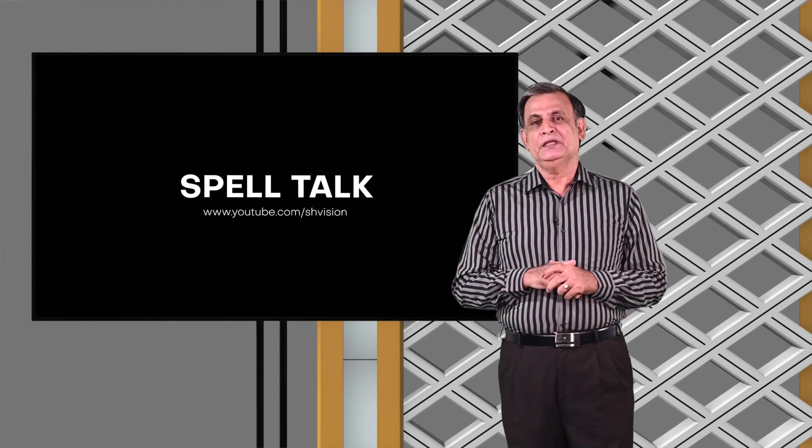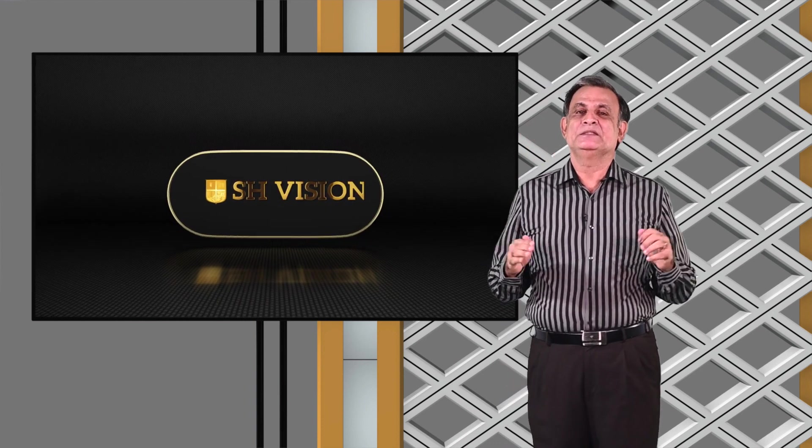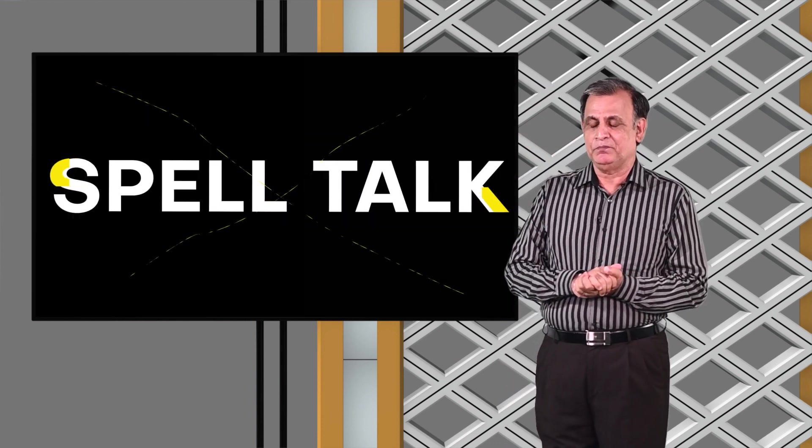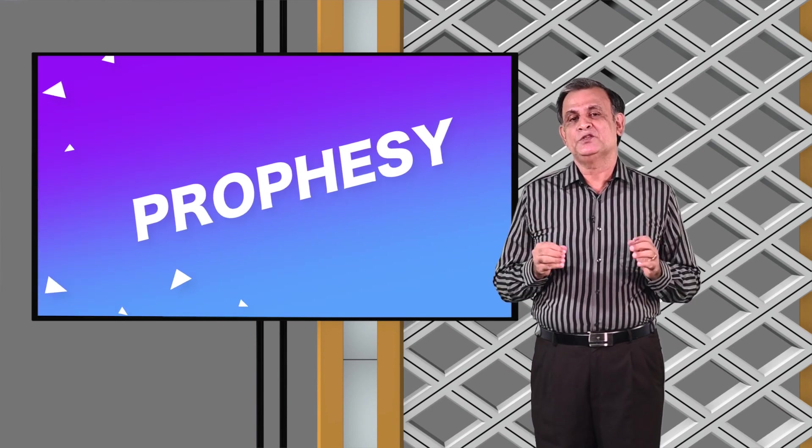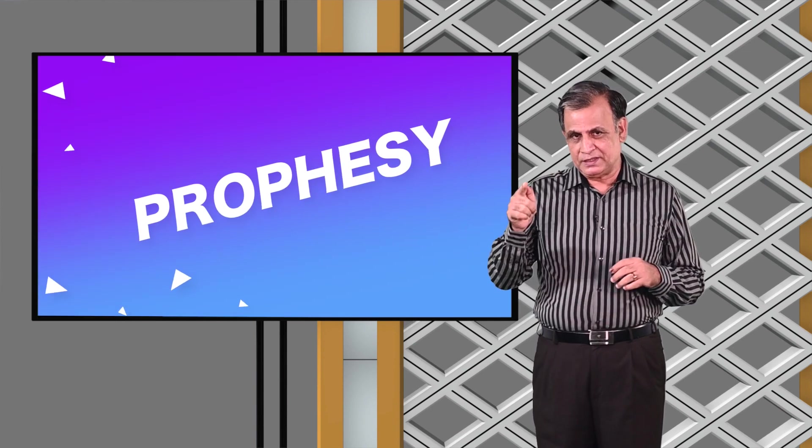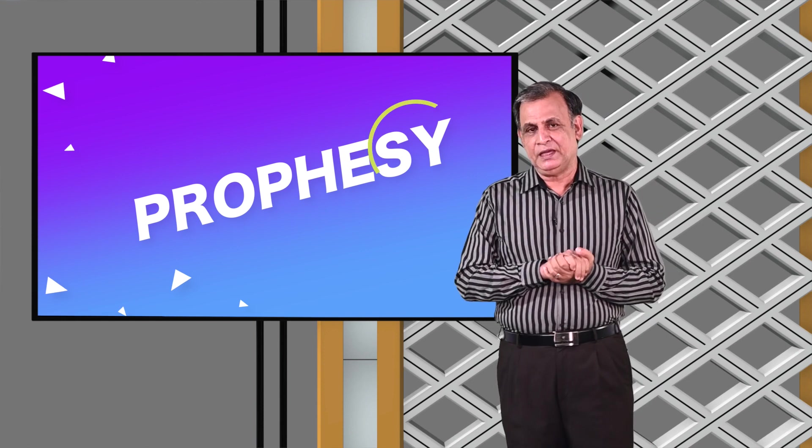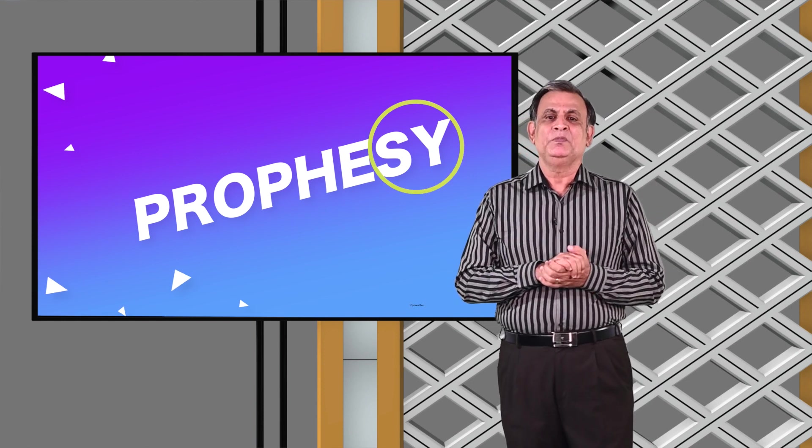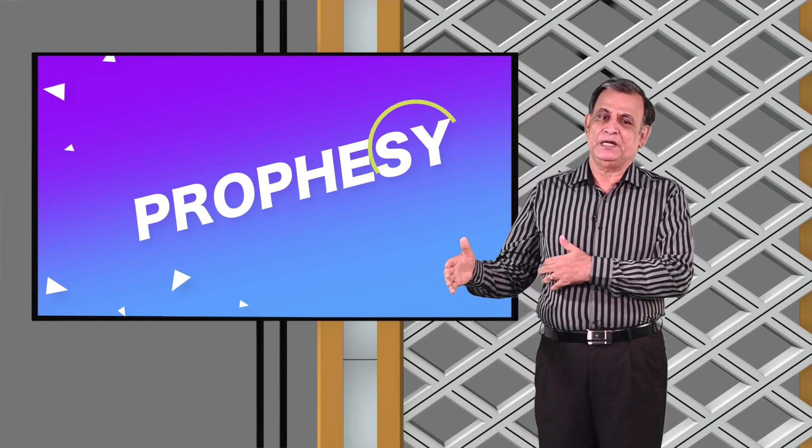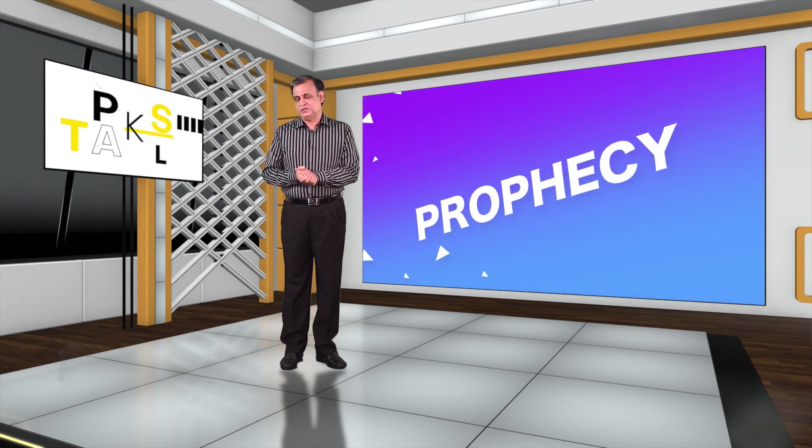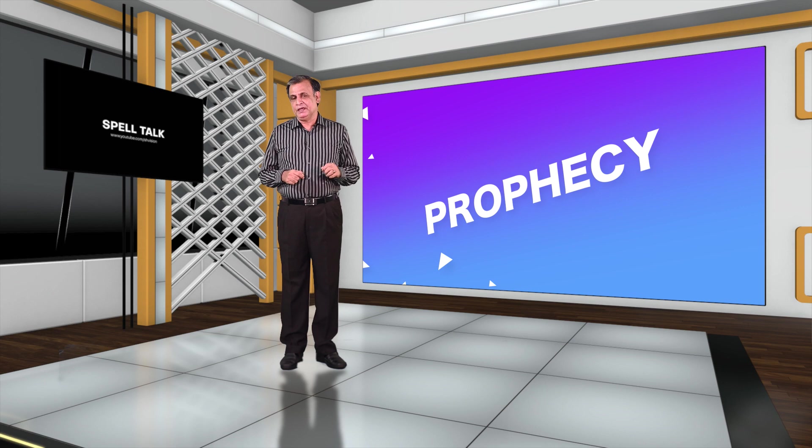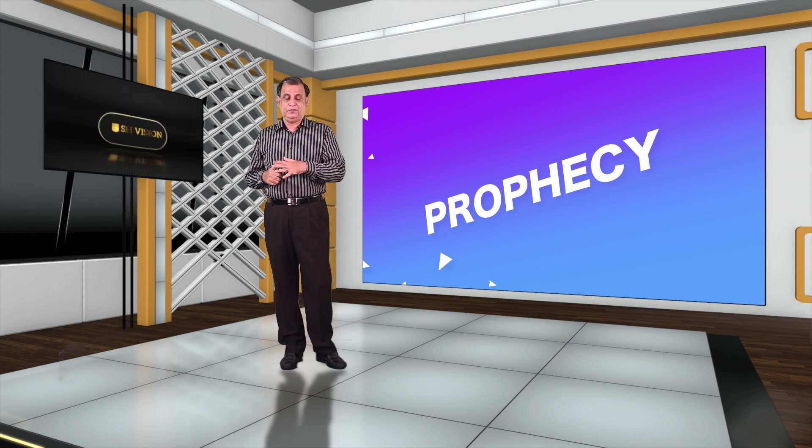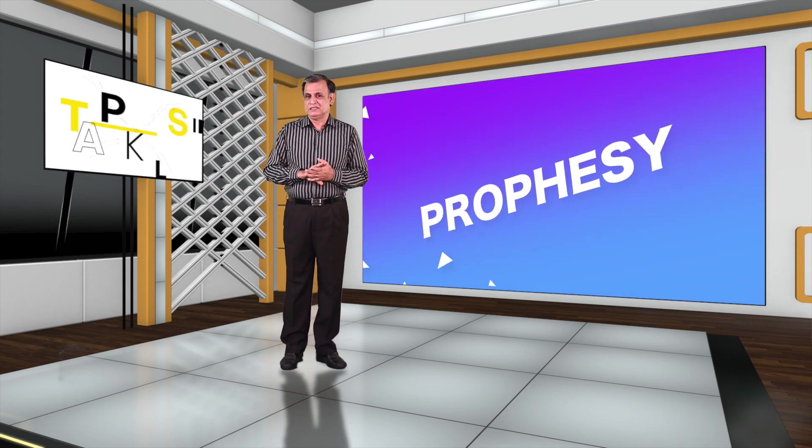Now we move to the next word in the pair, prophesy, the verb. The spelling is P-R-O-P-H-E-S-Y. The tricky area is the S-Y at the end. Prophesy means predict. So, prophecy noun P-R-O-P-H-E-C-Y, and prophesy the verb P-R-O-P-H-E-S-Y.